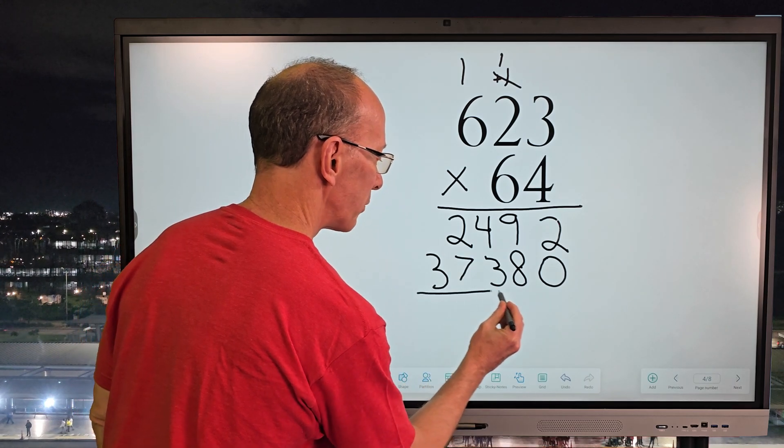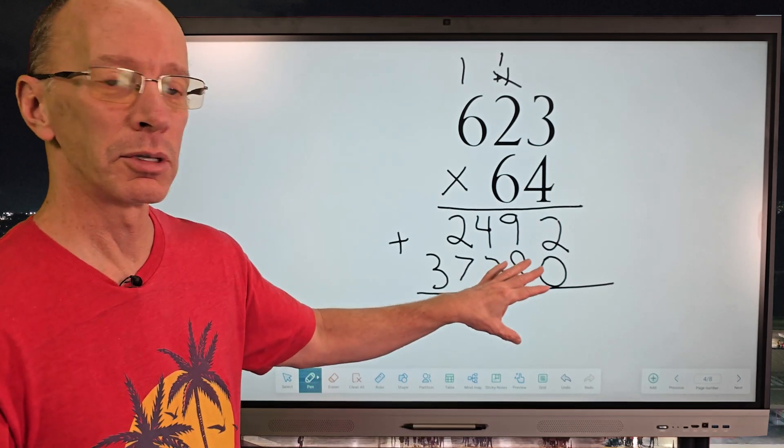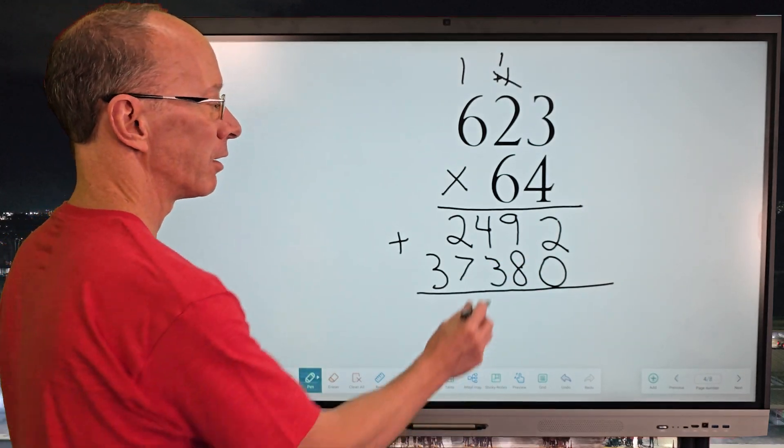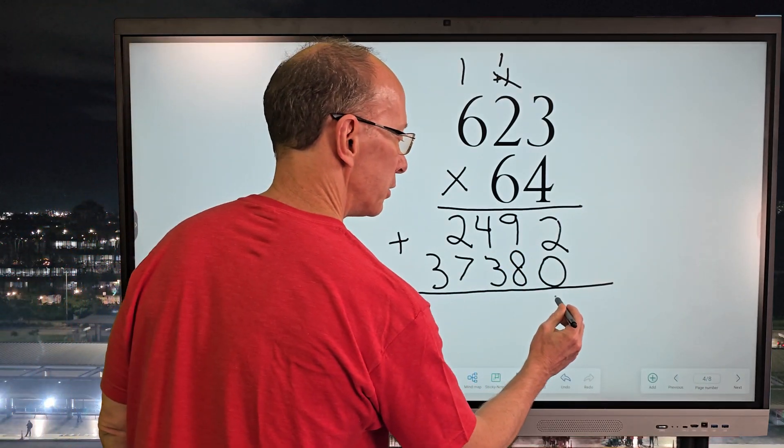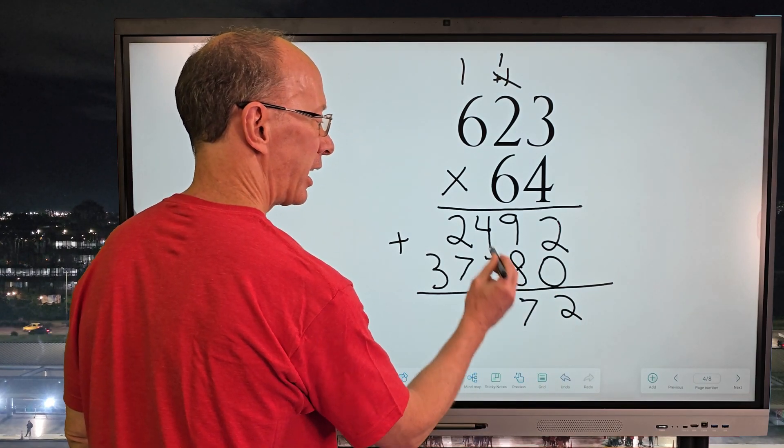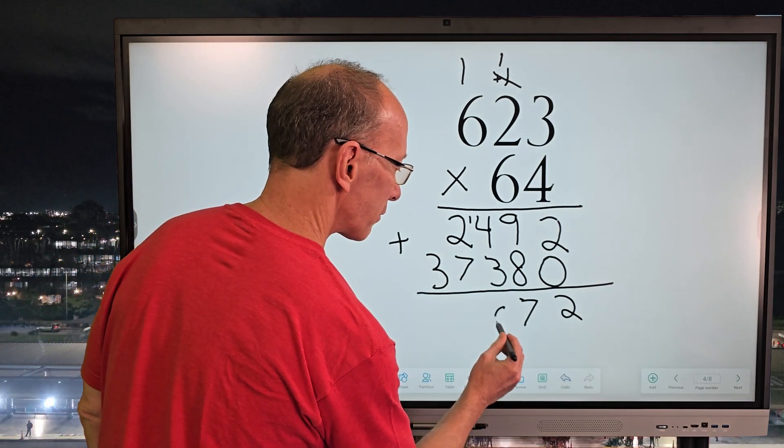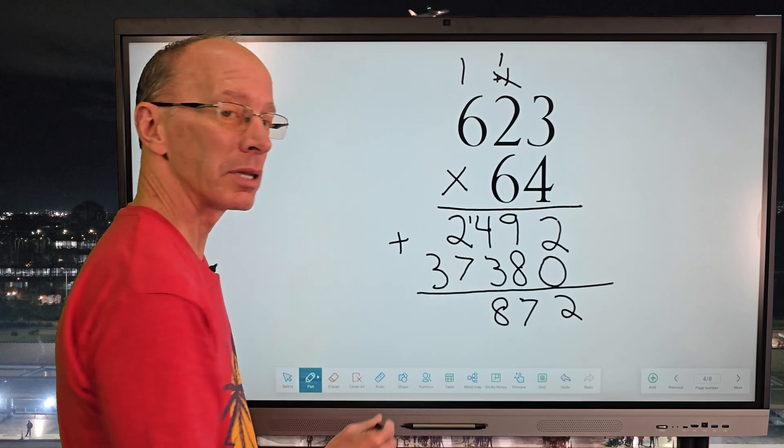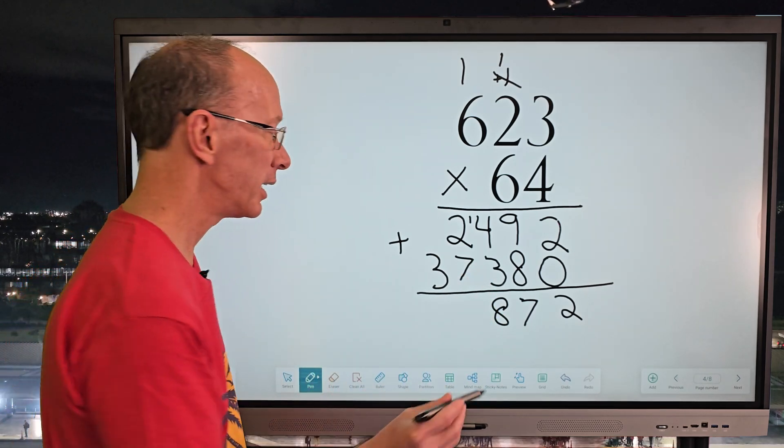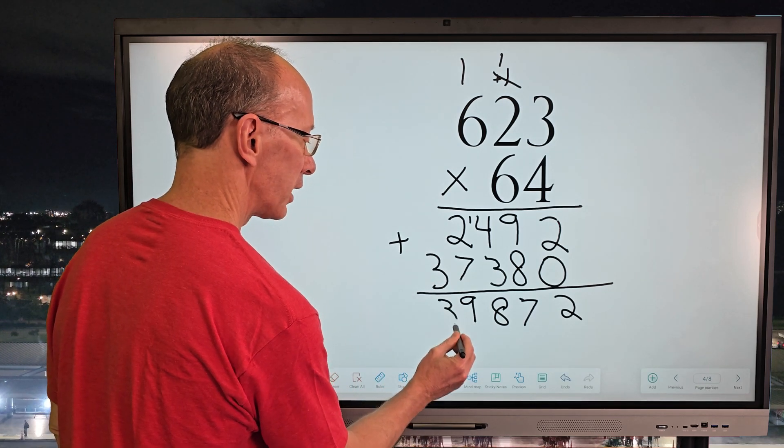And now our next step that we're going to do is we're going to add. I'm going to add these numbers right here. So now 2 plus 0 is 2. 9 plus 8 is 17. Carry the 1. And then 4 plus 1 plus 3 would be 8. And then 7 plus 2 equals 9. And then just drop that 3 down just like that. Pretty fun.